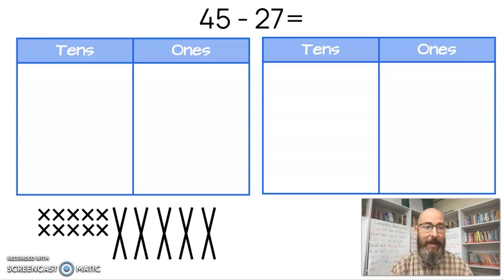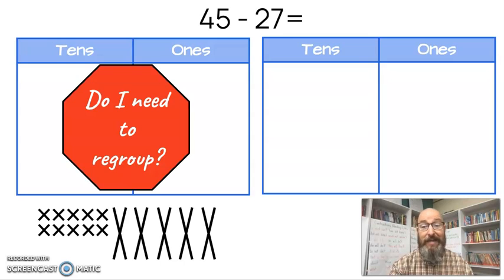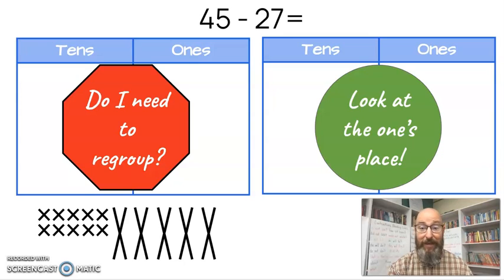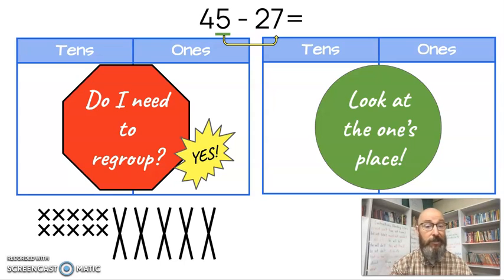45 minus 27. Again, what's the question I asked first? That's right. Do I need to regroup? And where do I find out that answer? The ones place. Very good. So we're going to compare it to the ones place in the subtrahend. In this one, we have a five in the larger number, the minuend, and we have a seven in the ones place of the subtrahend, the smaller number. Five is not as big as 27. So do I have to regroup? Yes, I do have to regroup.